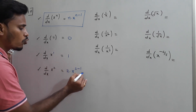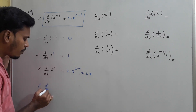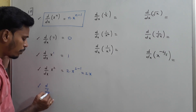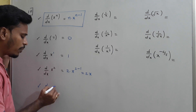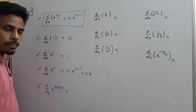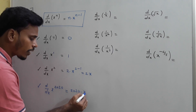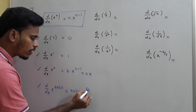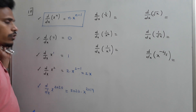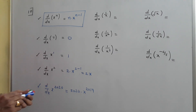In the same way, if you wish to find d/dx of x^2020, the answer is 2020 times x to the power 2019.